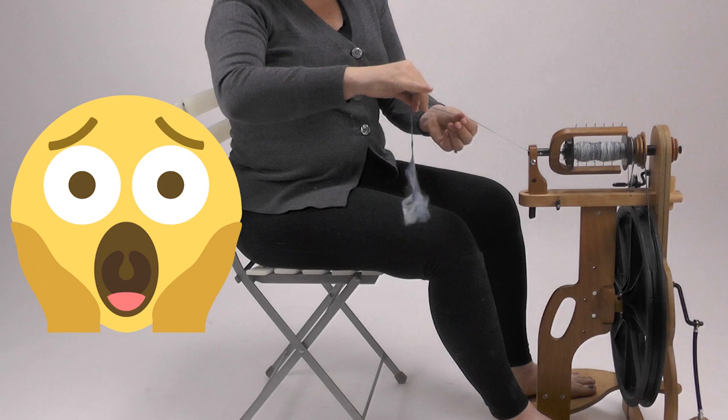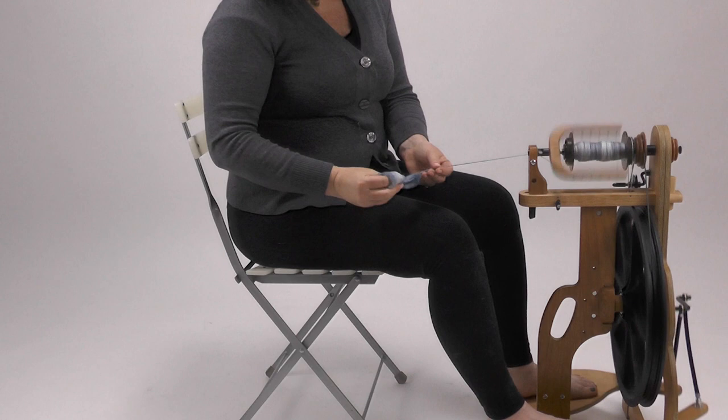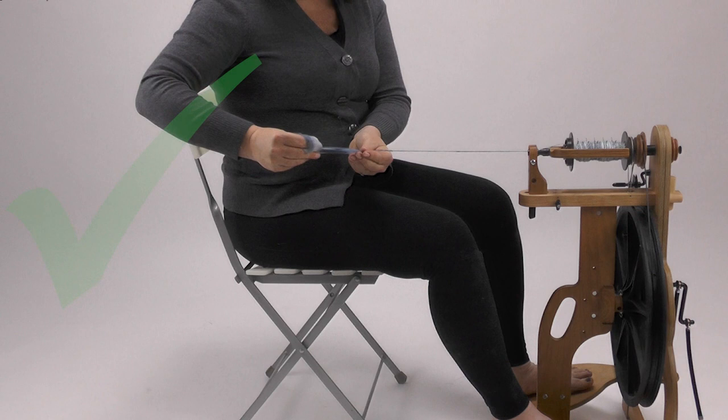Instead, if you spot a problem in your spinning, stop treadling. Leave the fiber in your fiber hand and adjust the twist with your forward hand. Then resume spinning.